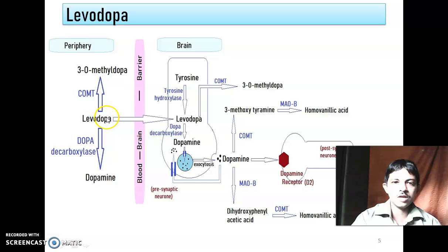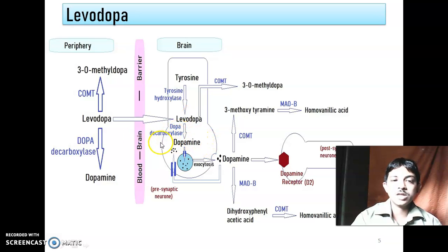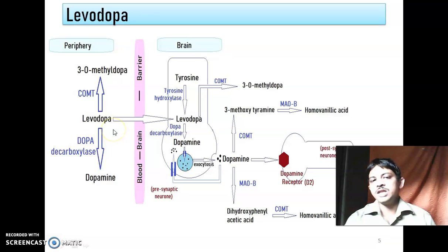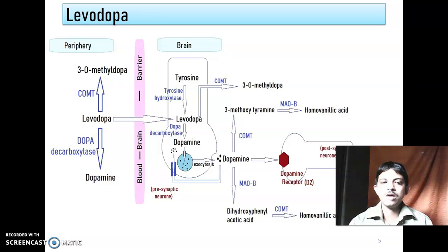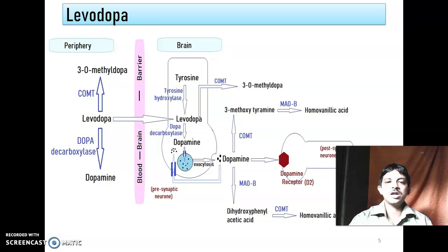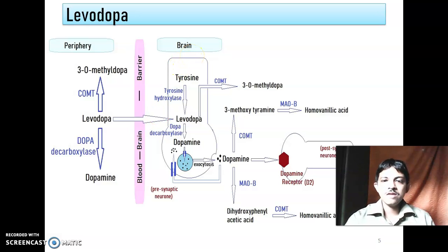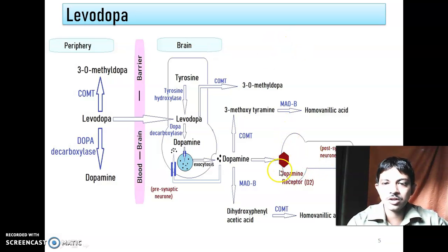The problem is that after giving levodopa, only 5% of levodopa can cross the blood-brain barrier and be converted into dopamine in the brain. The remaining 95% of levodopa is destroyed before it reaches the CNS. The dopamine synthesized in the brain acts on the D2 receptor.